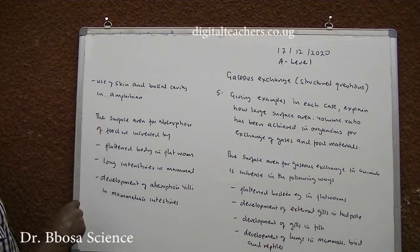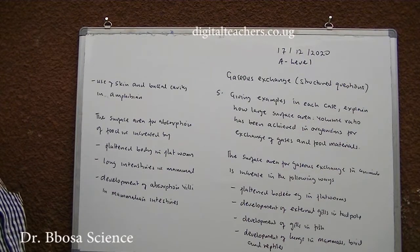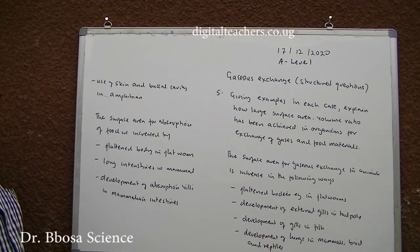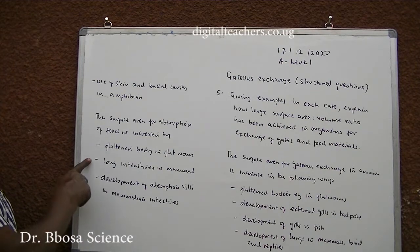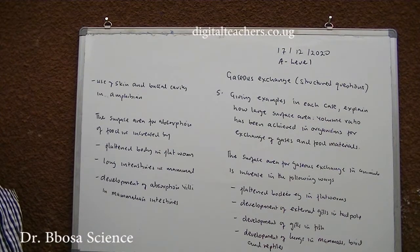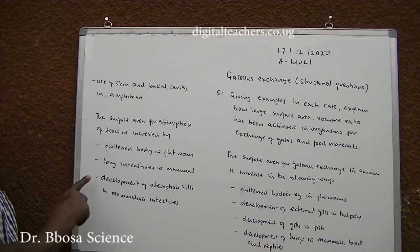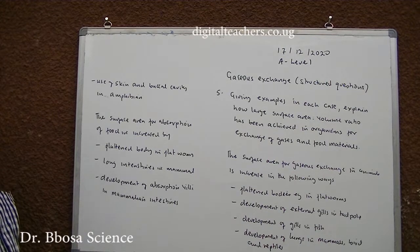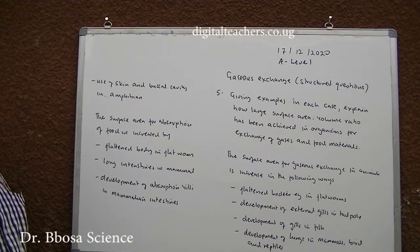The surface area for absorption of food is increased by: 1. Flattening of the body in flatworms. 2. Longer intestines in mammals. 3. Development of absorptive villi in mammalian intestines.